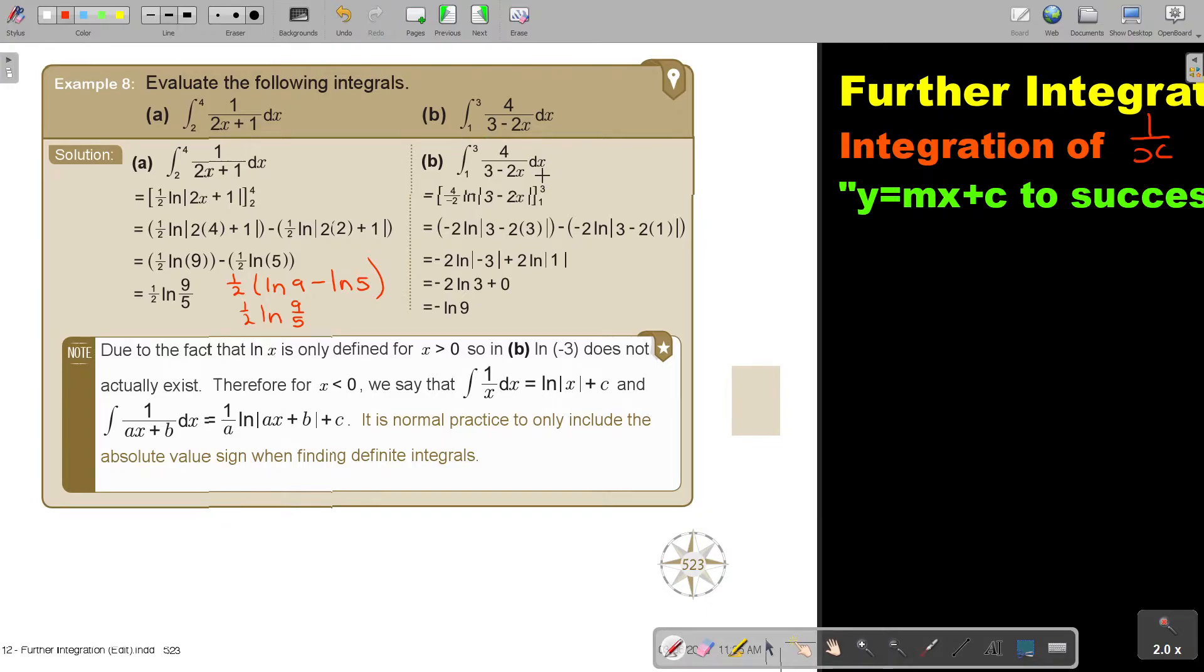If I look at this one, now remember the value in front of x is negative 2. So keep the 4 on top, bring the negative 2, ln, and again this, and there's my boundaries, 3 and 1.